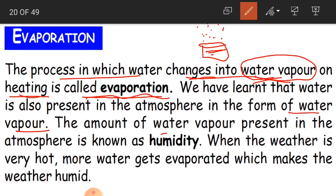The amount of water vapor present in the atmosphere is known as humidity. This water vapor in the air is what we call humidity. We cannot see this water vapor in the air, but we can feel it. Sometimes you feel very sweaty — that is because of the humidity in the air.